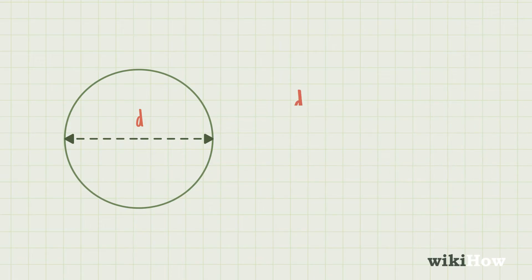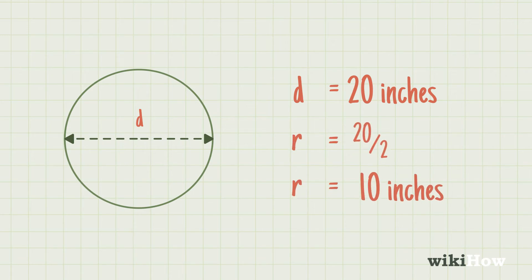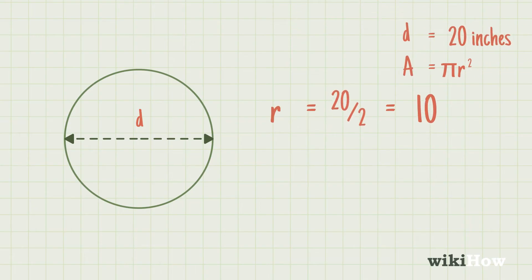For example, if the diameter is 20 inches, you would divide that in half and get 10 inches. Then plug the radius into the formula for finding area.